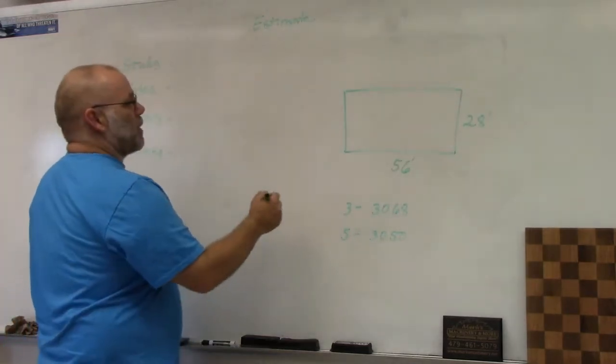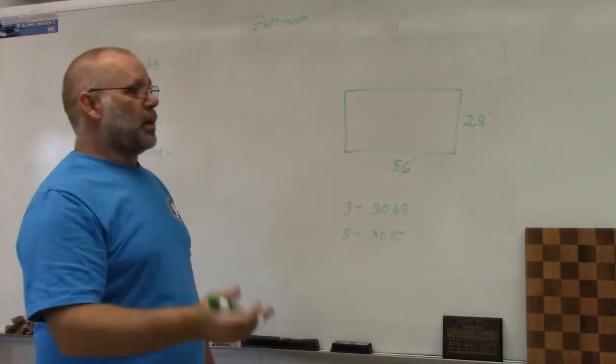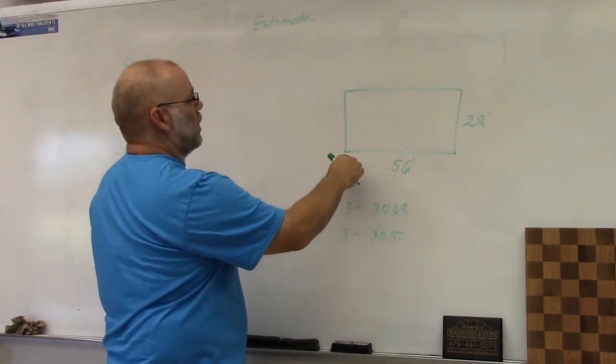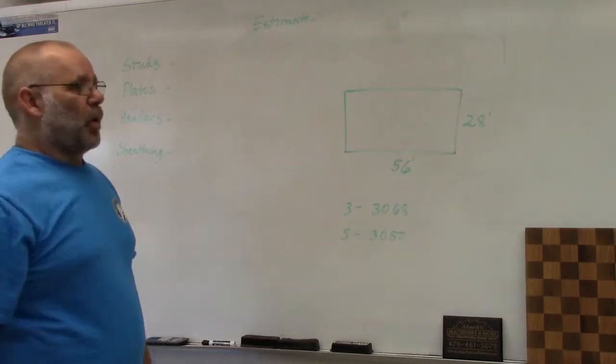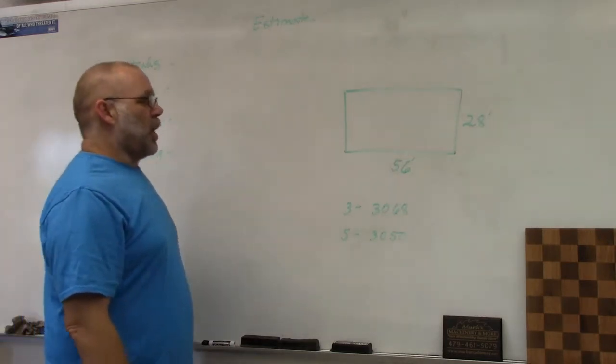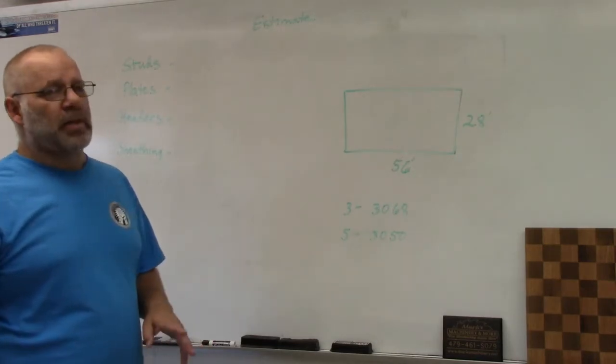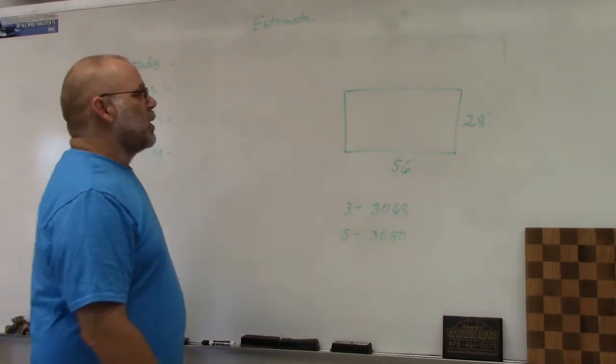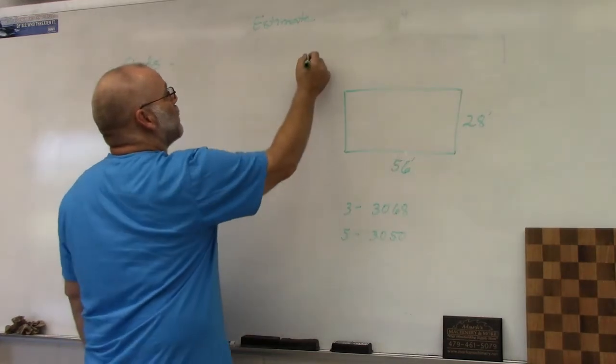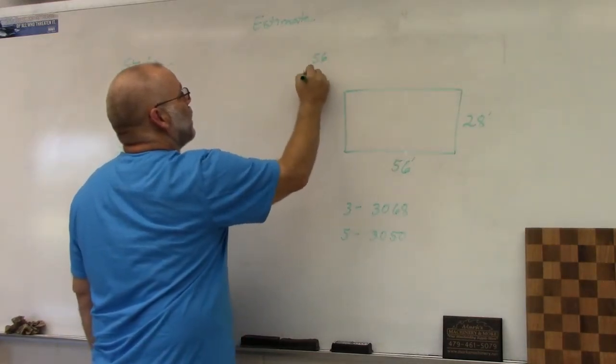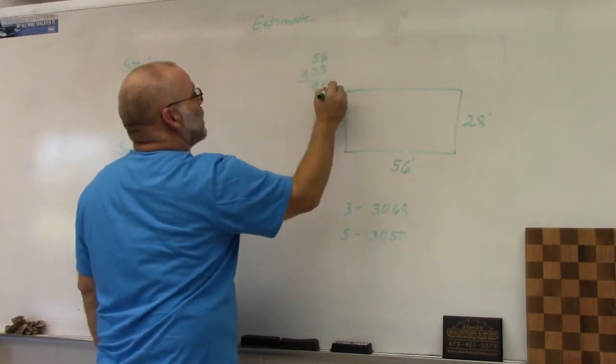Let's start with studs. There are several ways to determine how many studs you need. You can count every extra one for doors, windows, corner posts, and T posts. An easier way is to take one stud for every linear foot of walls you're going to build. All we have to do is add up how many linear feet we have. We're going to take 56 plus 28 and that gives us 84 linear feet.